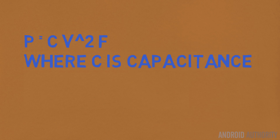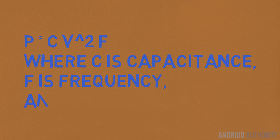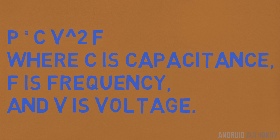Now it turns out that there's a direct correlation between the frequency — the clock frequency of a CPU, 1 gigahertz, 1.5 gigahertz, 2 gigahertz — and the amount of power that it needs. That's because there are all these transistors inside the chip, and every time they have to switch that uses power. Therefore if you switch them at a lower frequency, there's less power used.